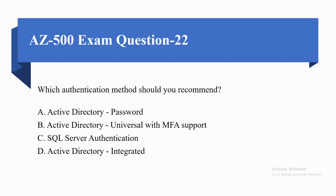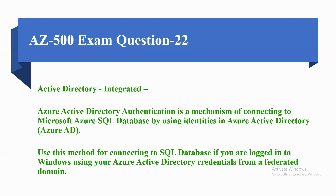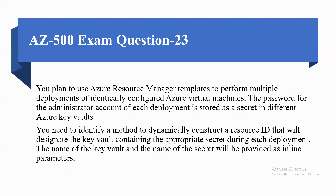Option A: Active Directory Password. Option B: Active Directory Universal with MFA support. Option C: SQL Server Authentication. Option D: Active Directory Integrated. The correct option is Active Directory Integrated, because Azure Active Directory authentication is a mechanism for connecting to Microsoft Azure SQL Database using an identity in Azure Active Directory. Use this method for connecting to SQL Database if you are logged into Windows using your Azure Active Directory credentials from a federated domain.